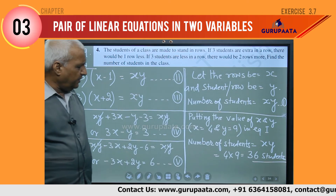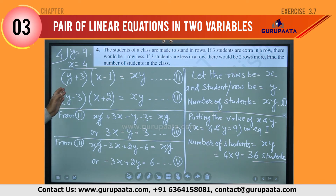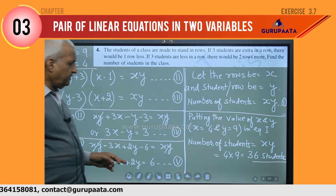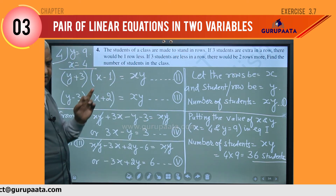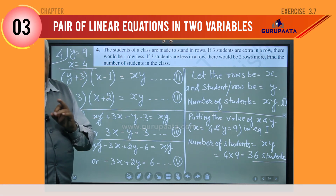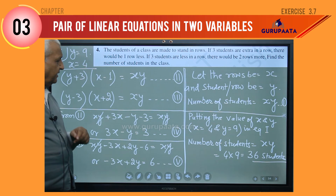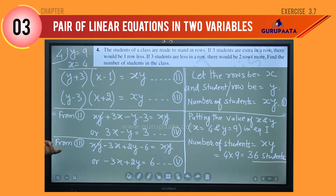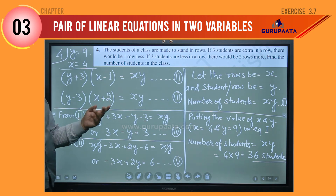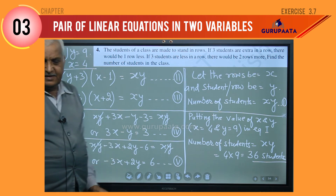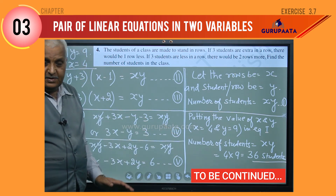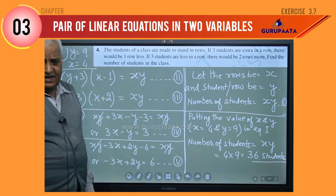Let's verify with the given conditions. y is students per row, equal to 9. If y increases by 3, it becomes 12. Rows reduce by 1, so 4 becomes 3. And 12 times 3 is 36 — correct. Second condition: if 3 is reduced from y, it becomes 6. Rows were 4, and 4 plus 2 equals 6. Six times 6 is 36 — correct. Both conditions are satisfied, so x equals 4, y equals 9, and the number of students is 36. Question number four is complete.